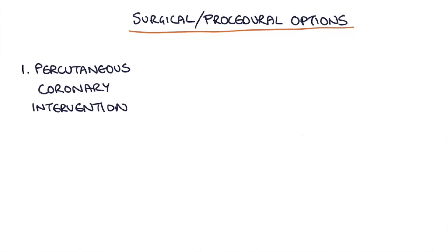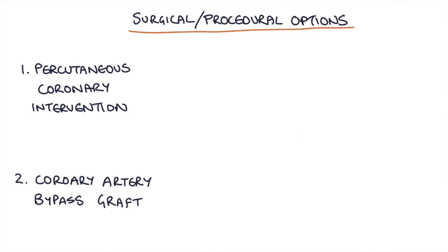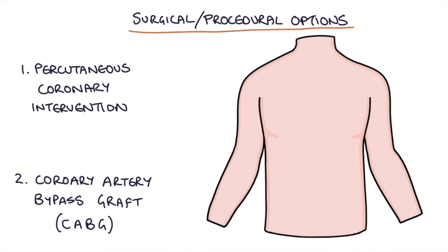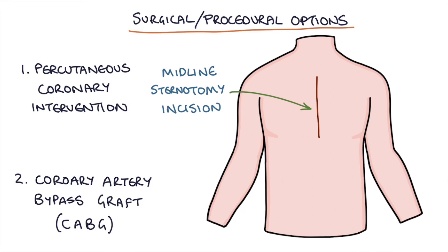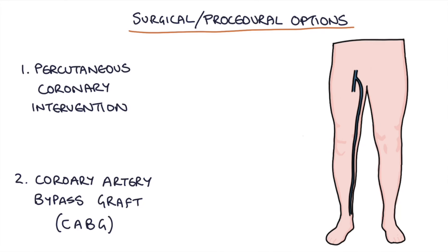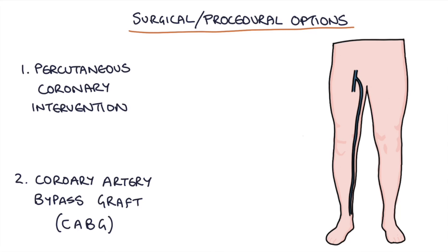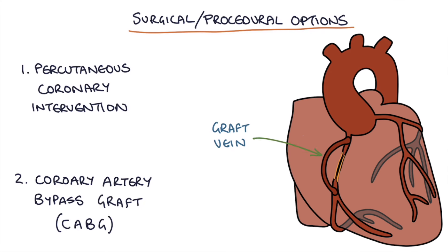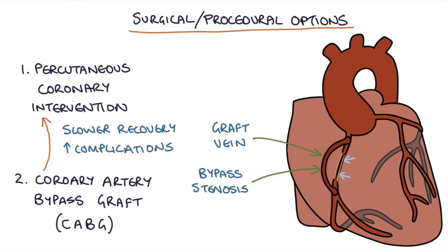The alternative is a coronary artery bypass graft (CABG), offered to patients with very severe stenosis. This involves a midline sternotomy incision down the centre of the chest, leaving the patient with a midline sternotomy scar. A graft vein — usually the great saphenous vein from the leg — is sewn onto the affected coronary artery to bypass the stenosis. Recovery is slower and complications are greater than PCI, but it's very effective for severely stenosed arteries.